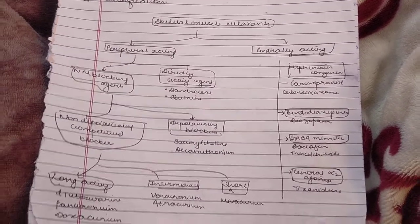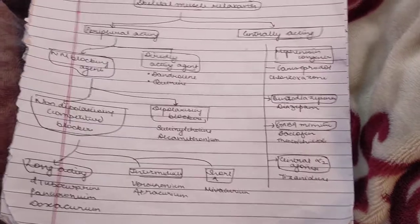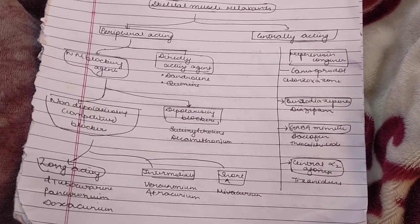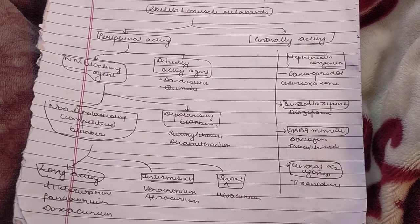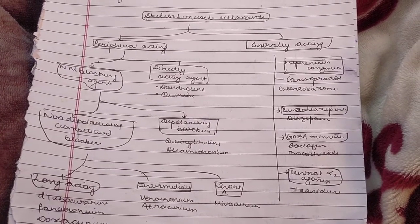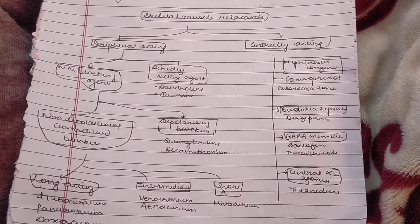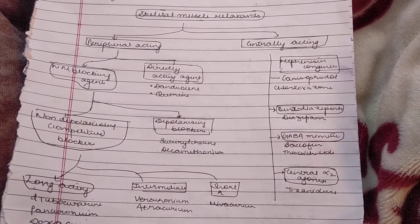Centrally acting agents are further subdivided into: mephenesin congeners, benzodiazepines, GABA-mimetics, and centrally acting alpha-2 agonists.